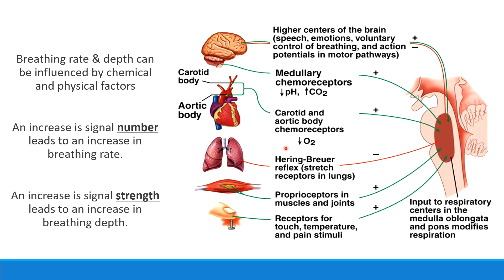This is called the Hering-Breuer reflex — your body's way of monitoring how stretched out your lungs are. If our lungs are very stretched out and we're tripping this reflex, it sends a message to the medullary rhythmicity center and to the pons saying: slow down, we don't need any more oxygen. All of this sensory stimuli is taken in and processed in those breathing centers to determine how quickly or slowly, and how deeply or shallowly, you're breathing.